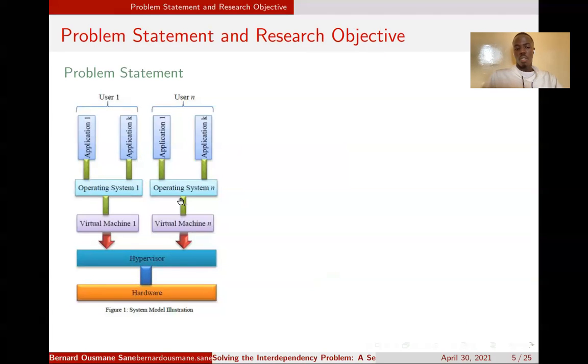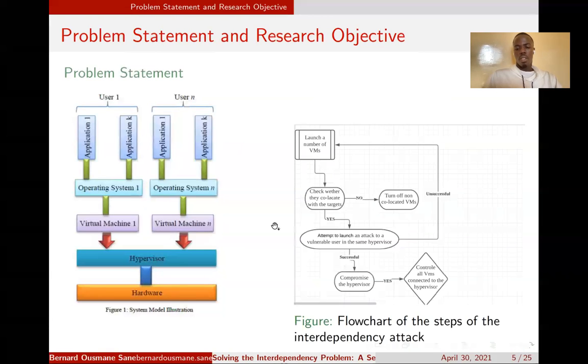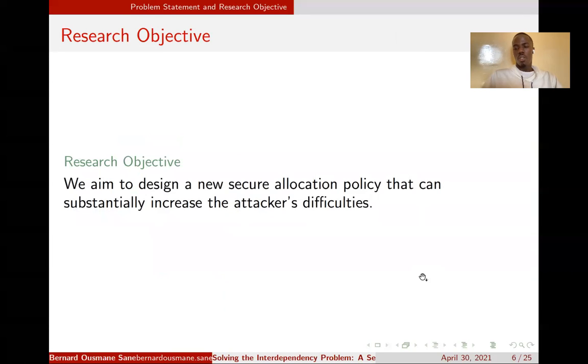Given the situation where many users share the same hypervisor, an attacker can launch a co-residency attack by following these steps: First, he will launch several virtual machines and check whether his machine co-locates with the target. If no, he will turn off the VM to reduce attack cost. Otherwise, he will try to compromise the vulnerable user, then compromise the hypervisor. As we know, if the hypervisor is compromised, all virtual machines connected to it will also be compromised. Unfortunately, until now, there is no efficient secure virtual machine allocation against co-residency attacks. That's why our main objective is to design a secure allocation against internal attacks by increasing the attacker's difficulties.